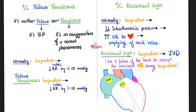Pulsus paradoxus and Kussmaul's sign can also be seen in cardiac tamponade. Pulsus paradoxus is an exaggeration of the normal phenomenon — a drop greater than 10 mmHg in systolic blood pressure during inspiration. Normally systolic might drop from 120 to 116 (4 mmHg); in constrictive pericarditis with the thick calcified pericardium, there is a greater drop — this is an exaggeration of a normal phenomenon.